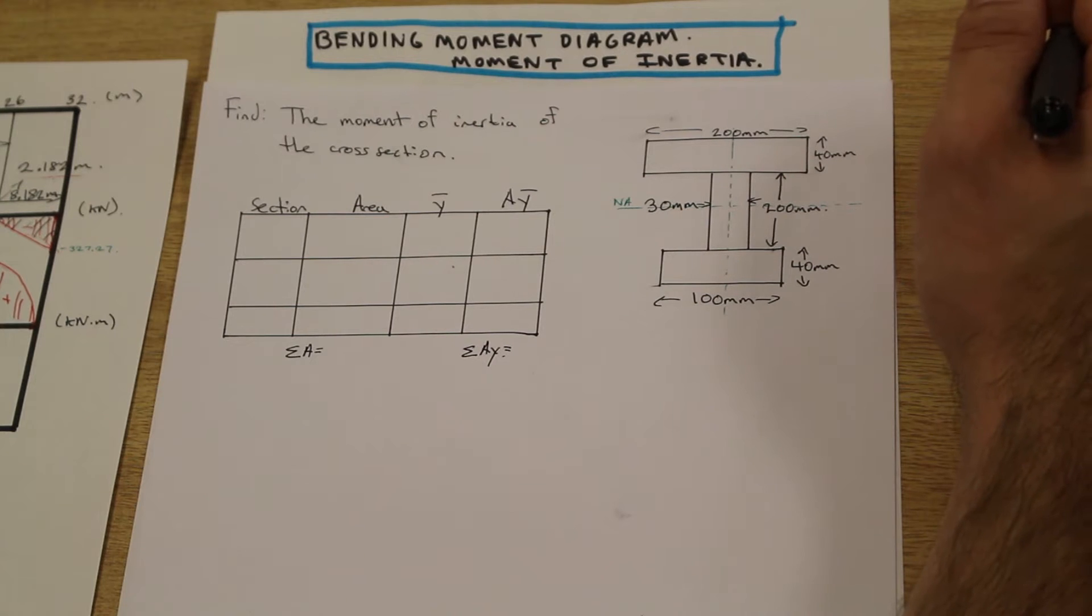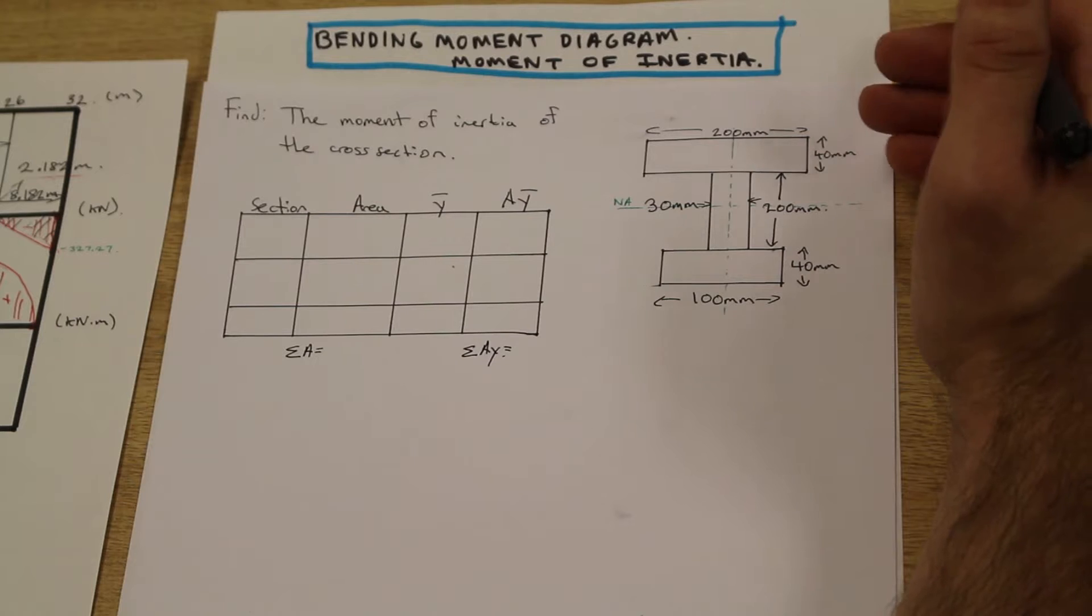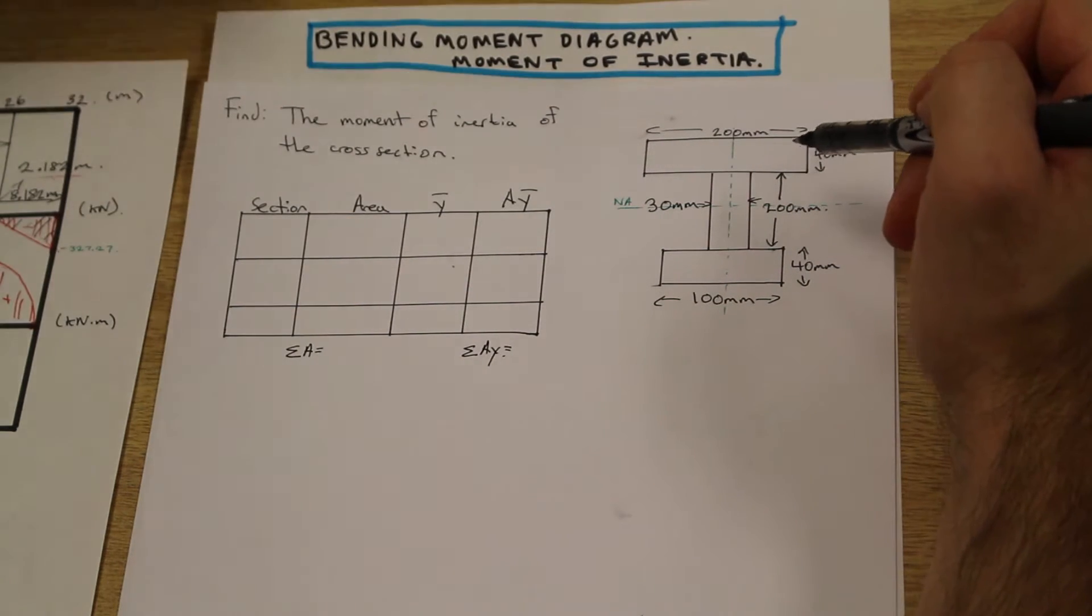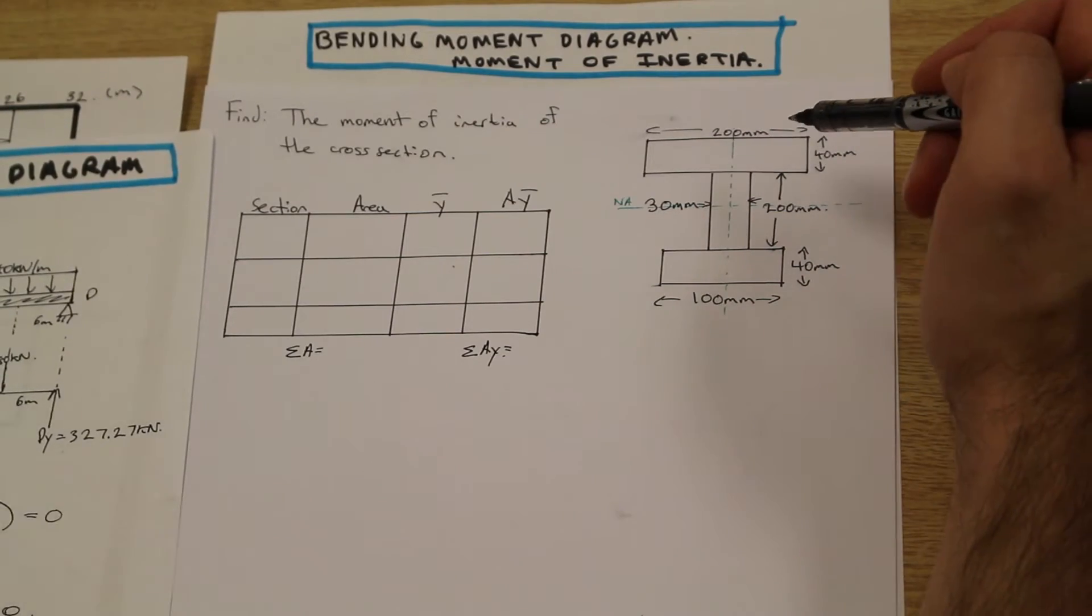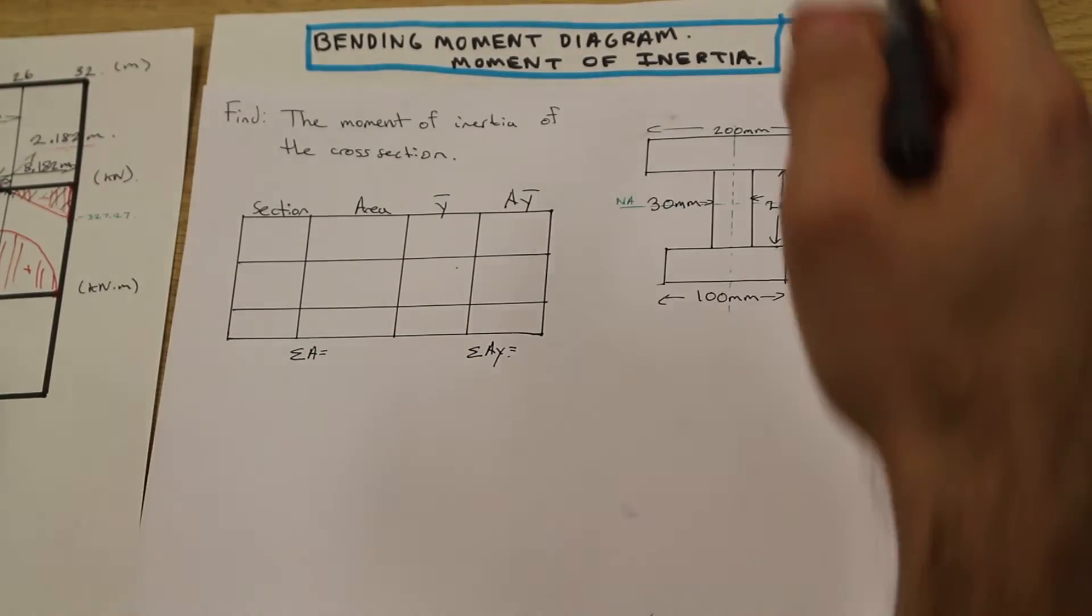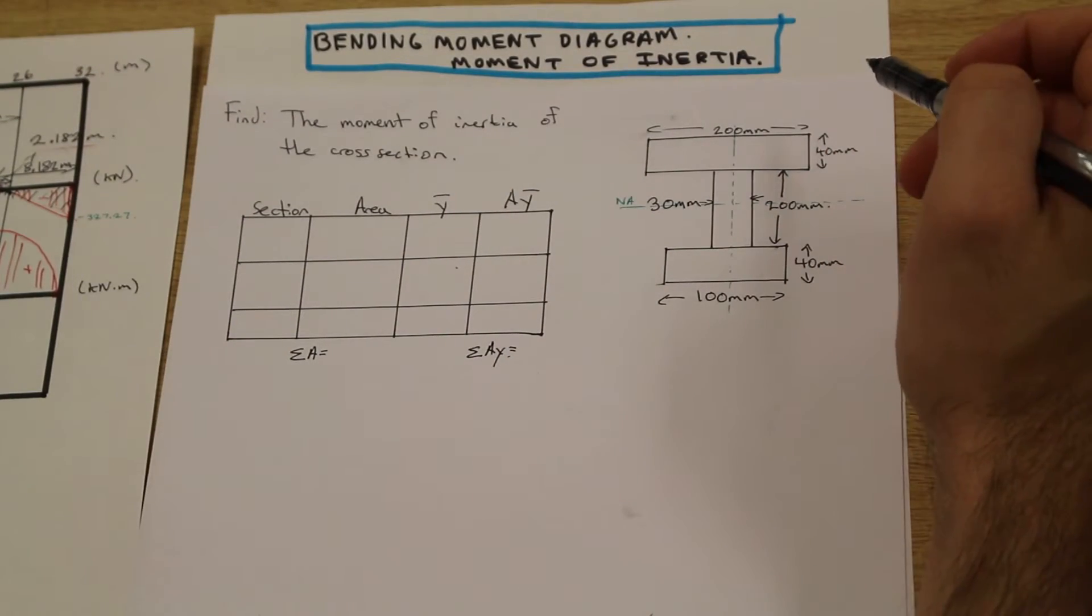It's also frequently called the second moment of area. So we are going to solve this cross section here. This cross section is the cross section from this beam, and we're going to use the information that we found from this beam to calculate the flexural stresses. But that's going to come after.